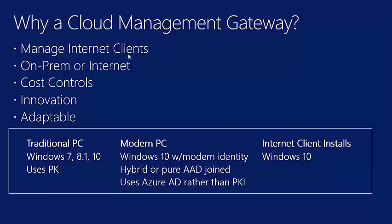We've long had the ability to manage internet clients with Config Manager — it's called internet-based client management — but that requires additional DMZ infrastructure like management points and distribution points that you must maintain. With the Cloud Management Gateway, you just need Azure. Clients automatically detect whether they're on-prem or on the internet and adjust accordingly, choosing on-prem infrastructure when available to avoid CMG costs.